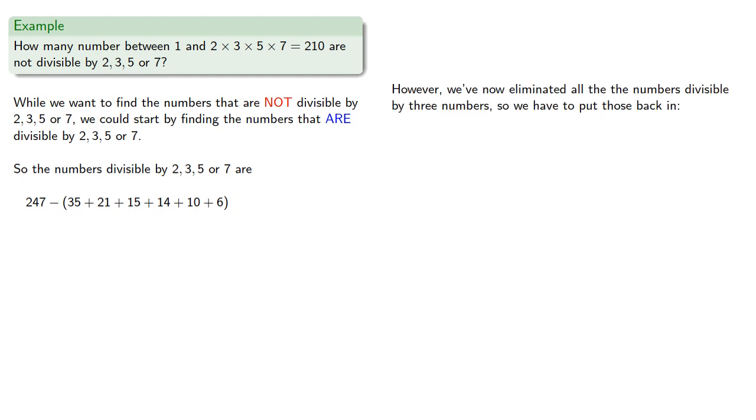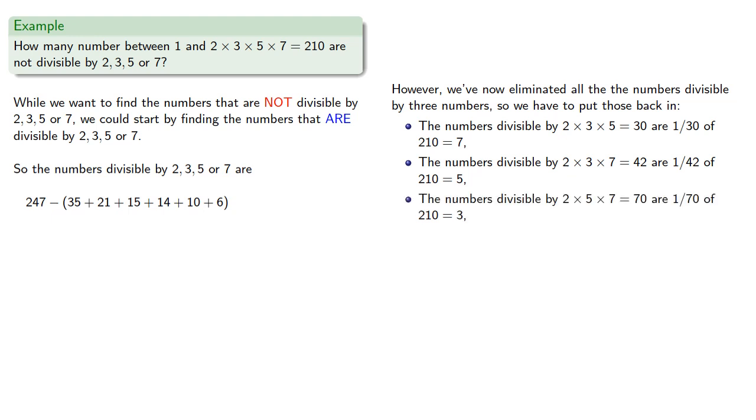However, we've now eliminated all the numbers divisible by 3 numbers, so we have to put back in the triples. The numbers divisible by 2 × 3 × 5, the numbers divisible by 2 × 3 × 7, the numbers divisible by 2 × 5 × 7, and the numbers divisible by 3 × 5 × 7. So we need to add back.